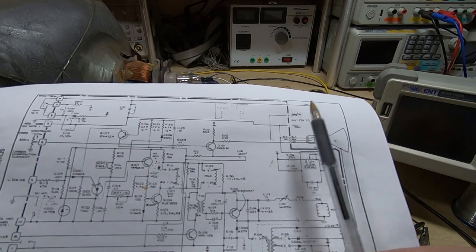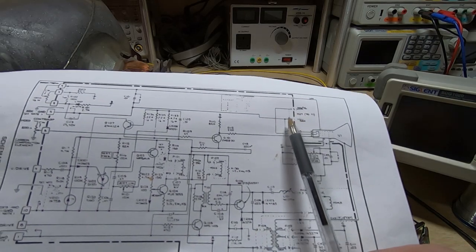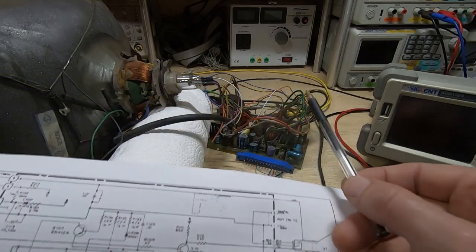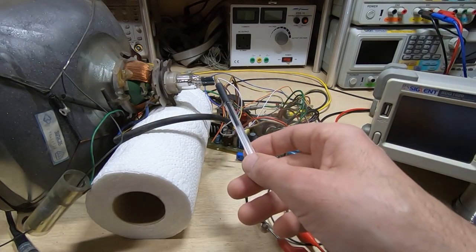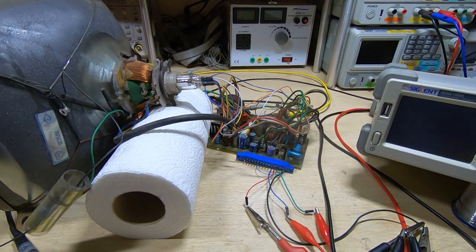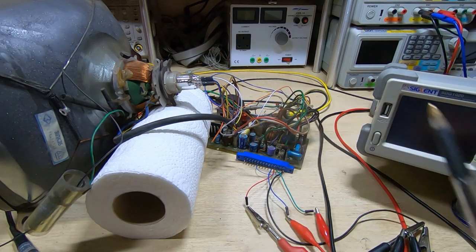So you might find there's a resistor, a fixed resistor, in the heater supply path. And the problem there is the voltage you get at the heater will of course be dependent on the current the heater draws, not just the voltage it's intended to run at.